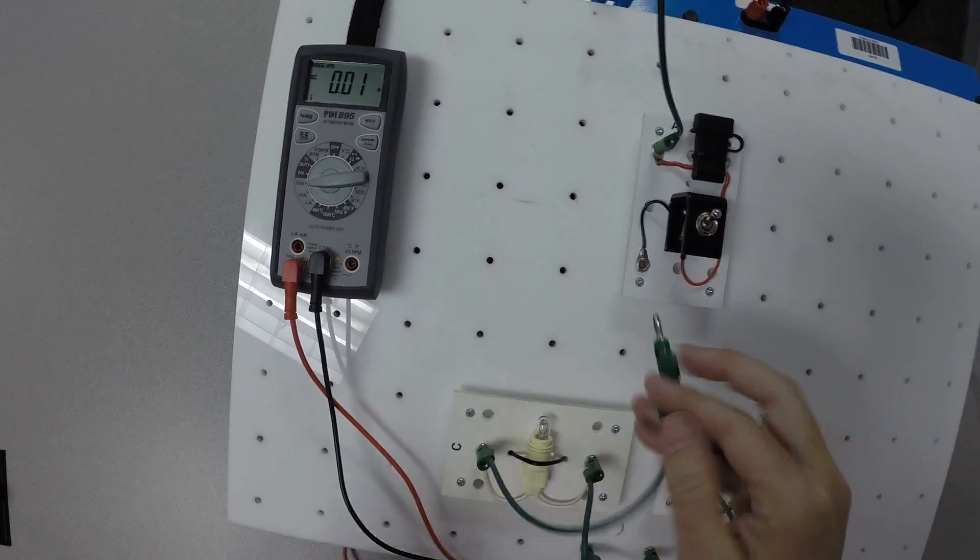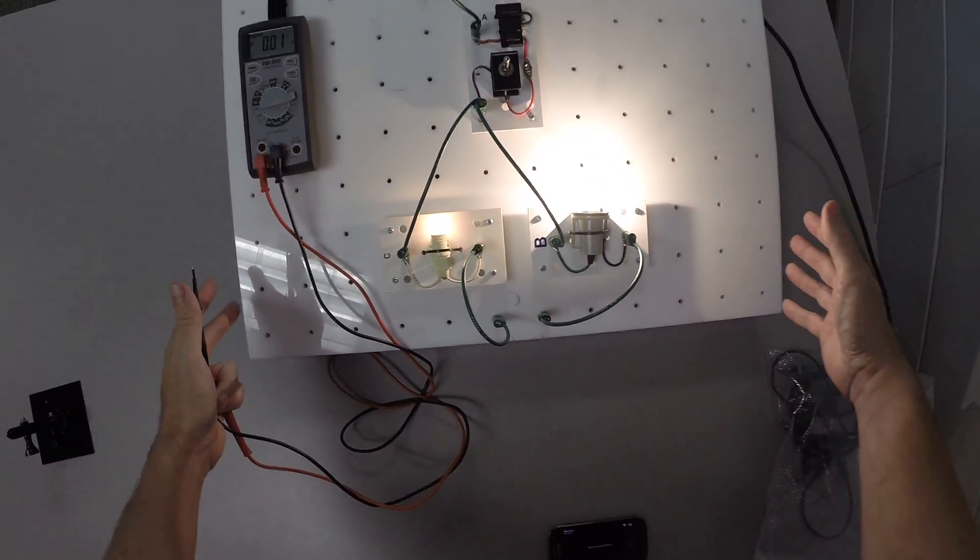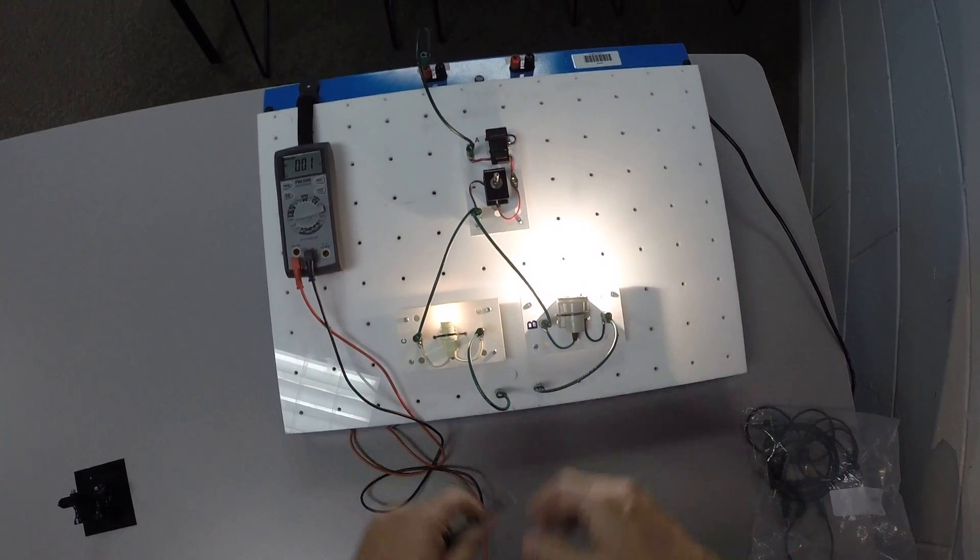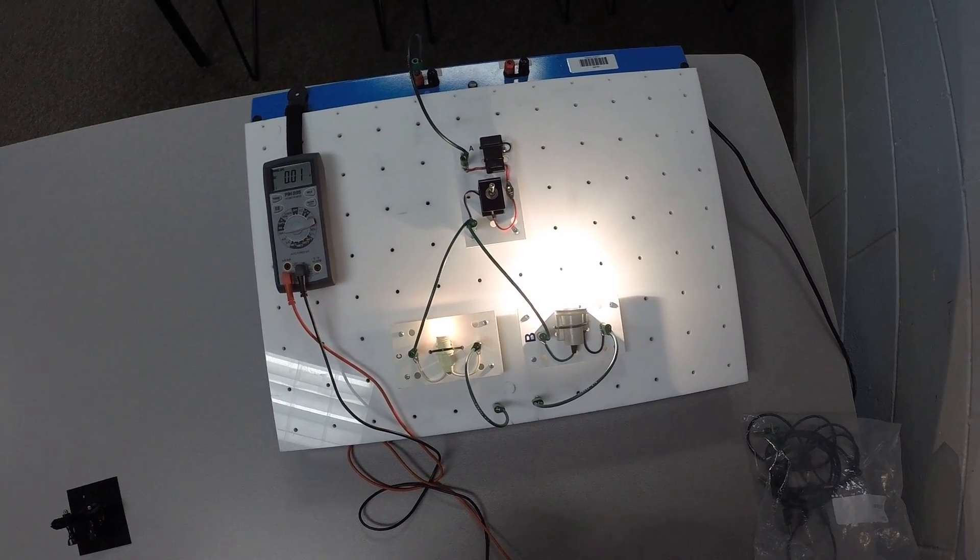That's measuring current in a parallel circuit. You have to measure both branches or all branches. You could have five different branches here, but you'd want to measure all branches separately and then add them together. And that would give you your total current for the entire circuit.